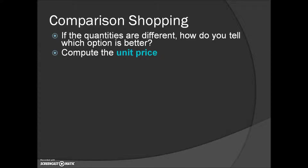We're going to do something known as unit price. Unit price involves finding the cost per one unit — could be per pound, per foot, per one ounce, per one fluid ounce, or some other quantity.